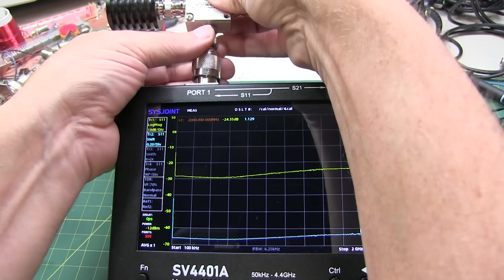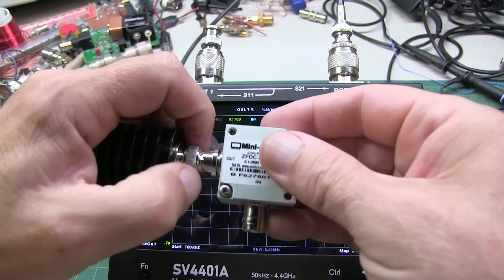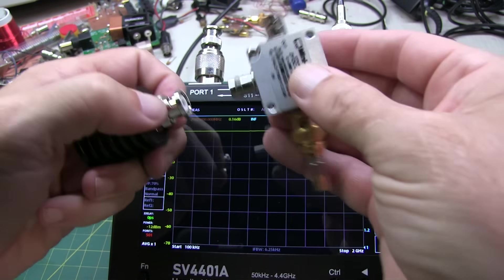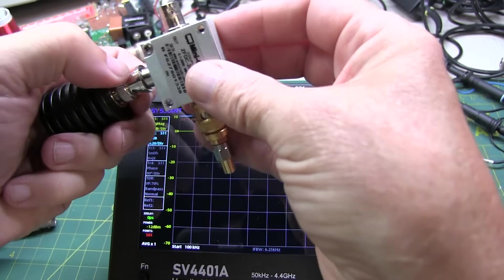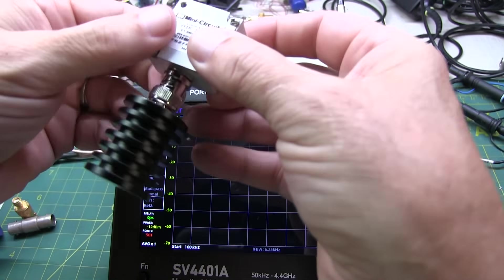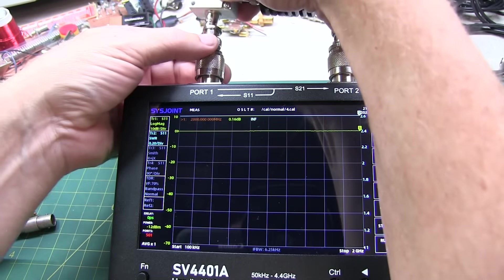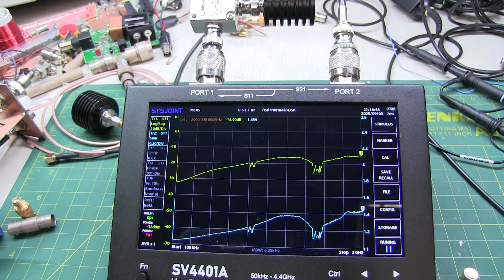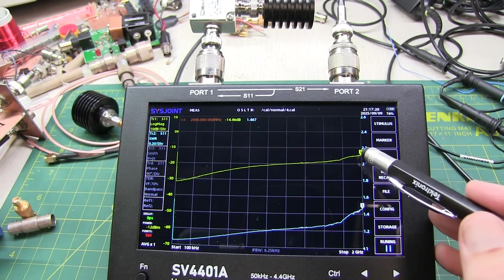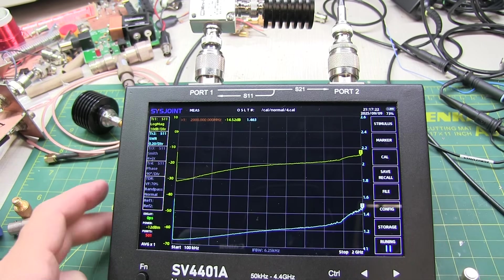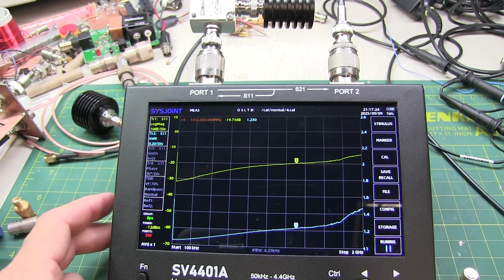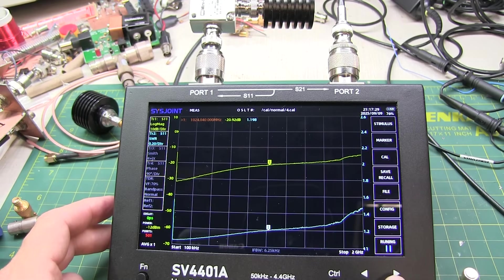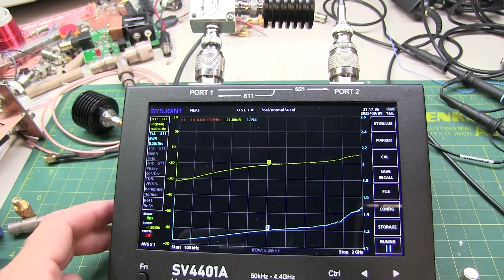So again, below the 1.2 typical that we are specified. So let's reverse this and take a look at the return loss, or in this case the reflection coefficient, of the output port with the input terminated. So we'll put the termination on the input and then send the signal in through the output port and take a look at our results there. Okay, so now 14 dB, about 1.4. If we look down kind of in the middle range here, you know, we're about 1.2, you know, in the neighborhood of about a GHz or so with about 21 dB return loss.